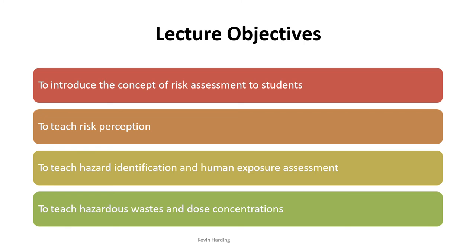We want to look at risk perception, and when we talk about risk here it's going to be environmental risk — specifically the risk of chemicals to the environment. We're not looking at financial risk or spending much time on occupational health and safety or process safety risk, though those exist. We'll also briefly look at hazard identification, human exposure assessment, and types of hazardous wastes we might come across.